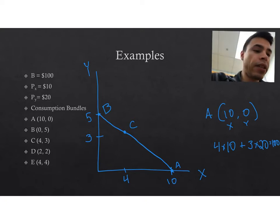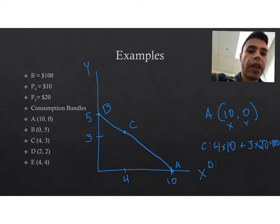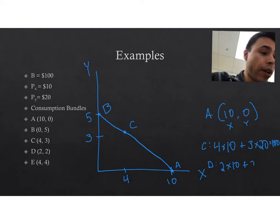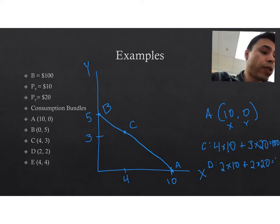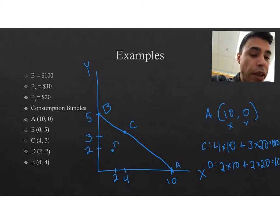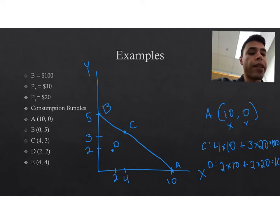What about point D? At point D we buy 2 units of good X, which costs $20, and 2 units of good Y, which costs $40. So 20 plus 40 equals $60 — we're only spending $60 of our budget. So point D at (2, 2) is an interior point. Yes, it's affordable and feasible, but we're not using all of our budget, so we're not on the line.